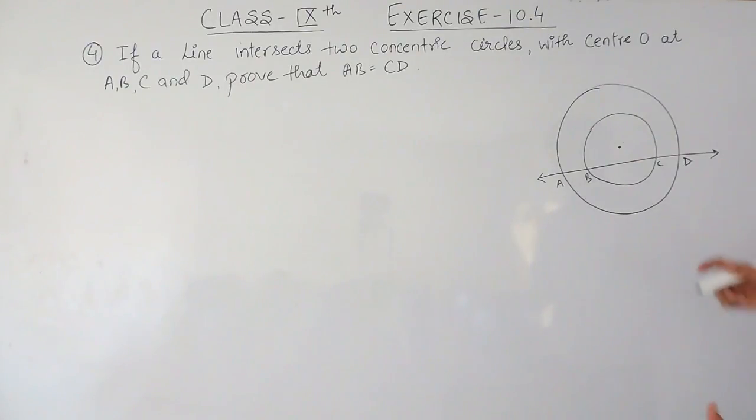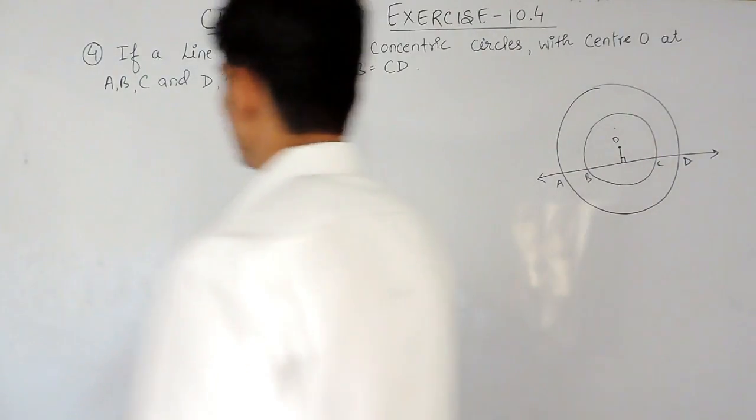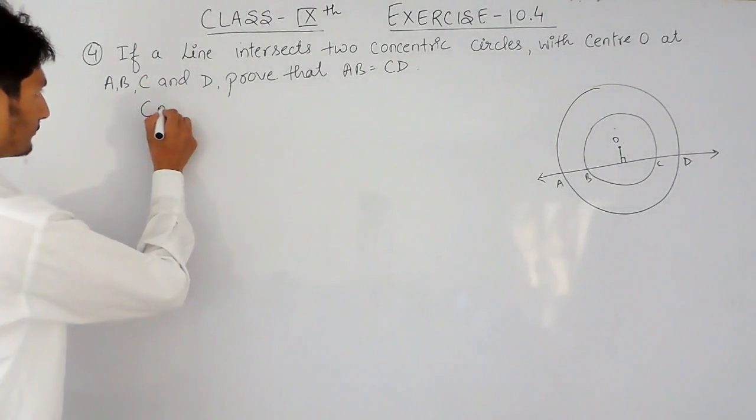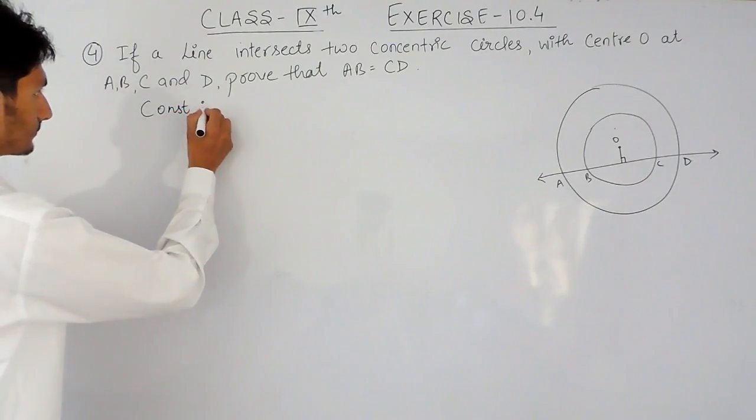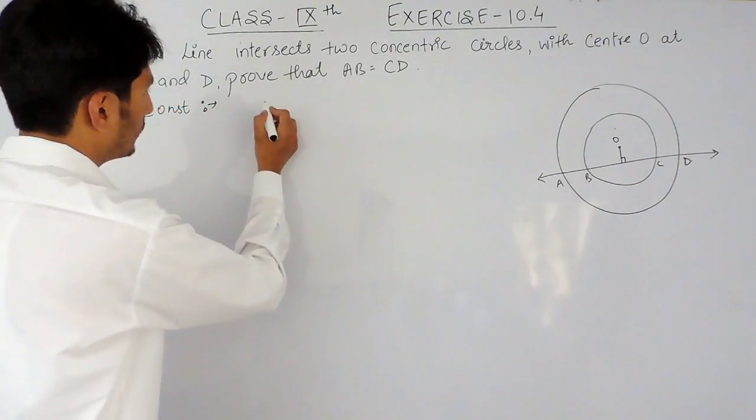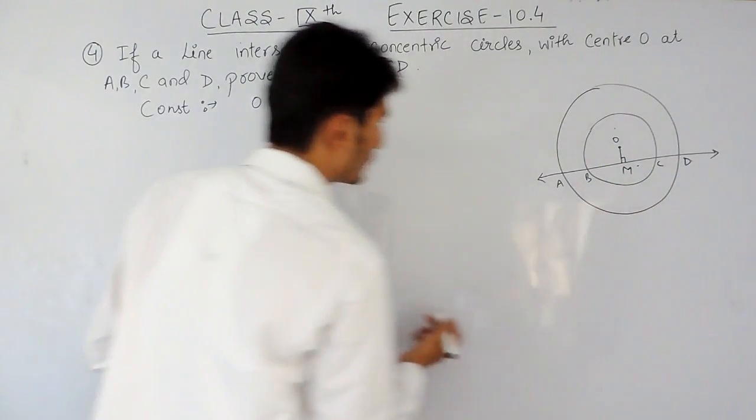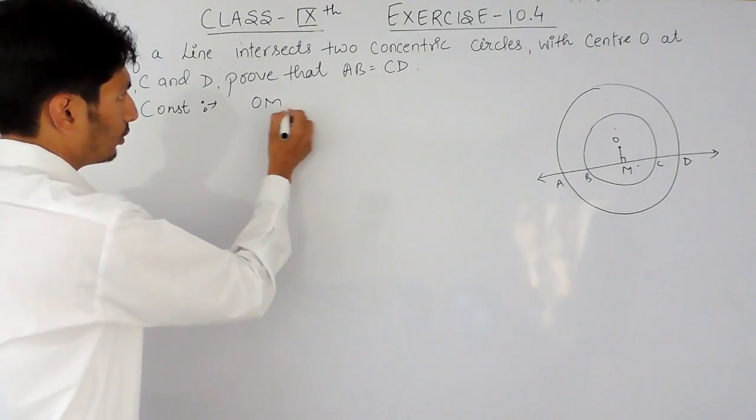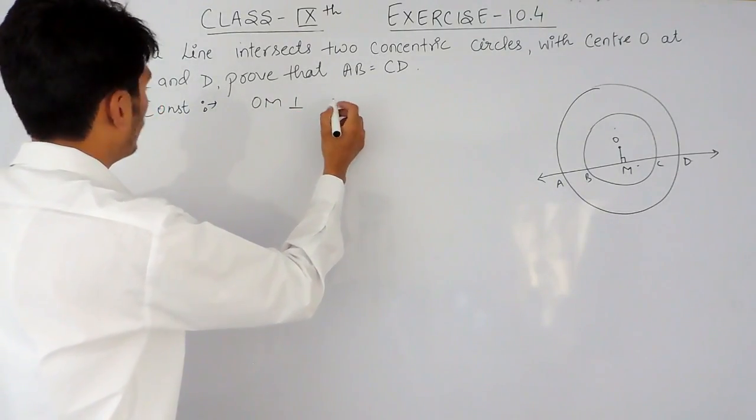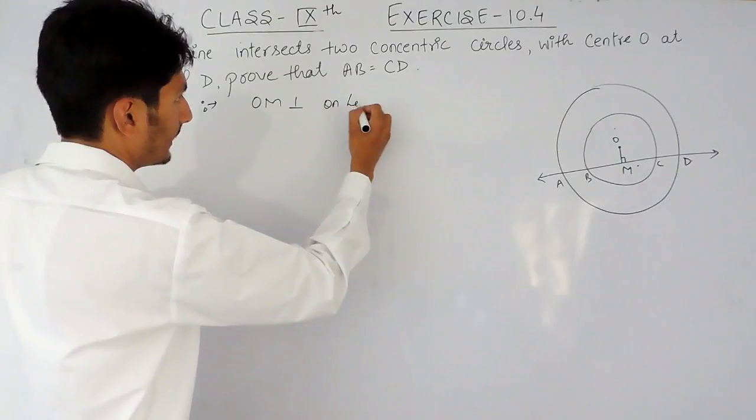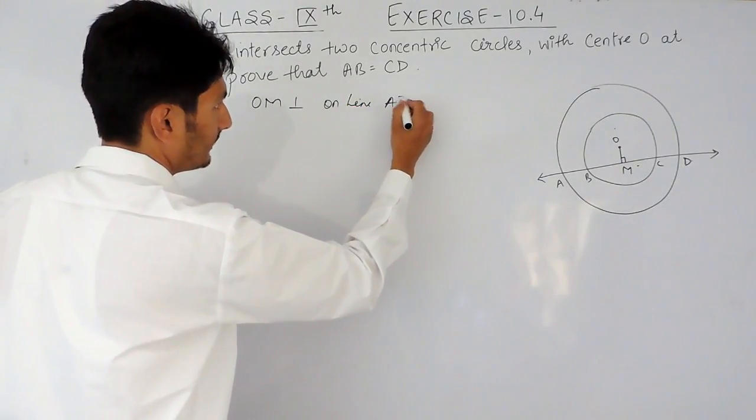And to do so, what we have to do is, first of all we have to make a construction here. We have to draw a perpendicular on this line. So, the first thing is, we have to do a construction. Draw OM, consider this point as M. So, draw OM perpendicular on line AD.